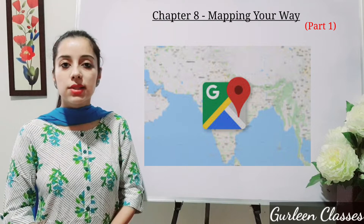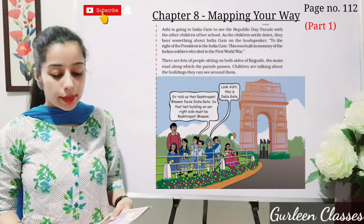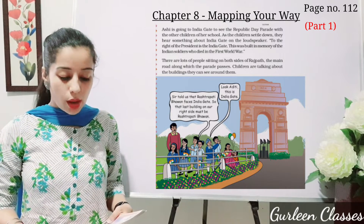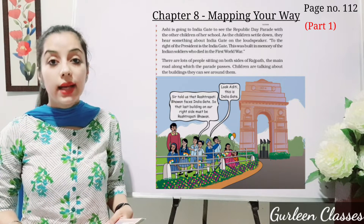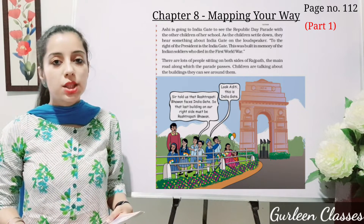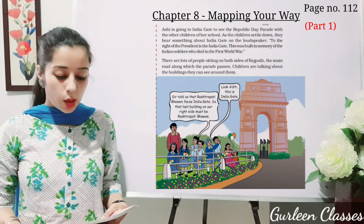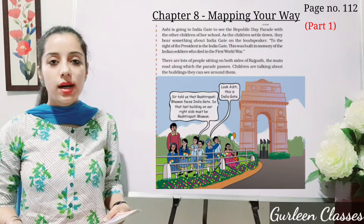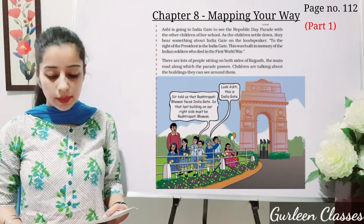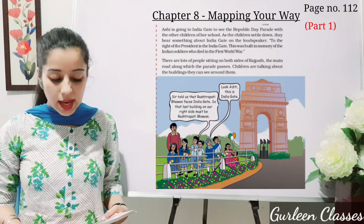Now let us read together from your NCERT book, page number 112. Ashi is going to India Gate to see the Republic Day Parade with other children of her school. India Gate is in Delhi. As the children settle down, they hear something about India Gate on the loudspeaker: 'To the right of the president is the India Gate. This was built in memory of the Indian soldiers who died in the First World War.' There are lots of people sitting on both sides of Rajpath, the main road along which the parade passes. Children are talking about the buildings they can see around them.